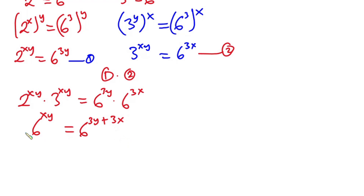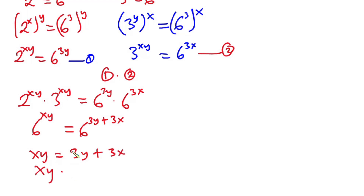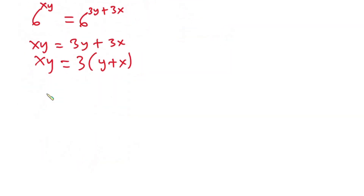Since we have the same bases on both sides, we equate the exponents: xy is equal to 3y plus 3x. Taking 3 as a common factor on the right side gives us xy equals 3 times y plus x, which is the same as xy equals 3 times x plus y, since addition is commutative.